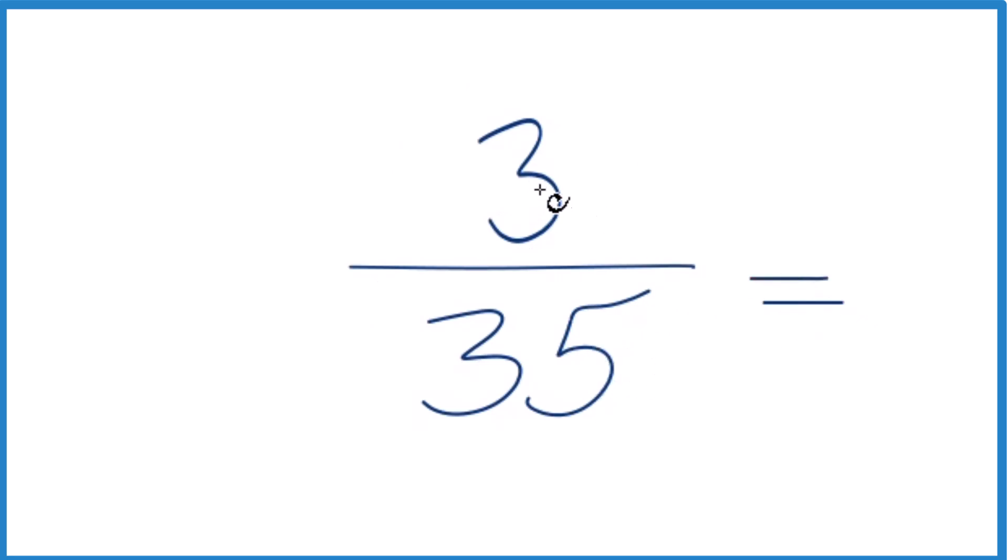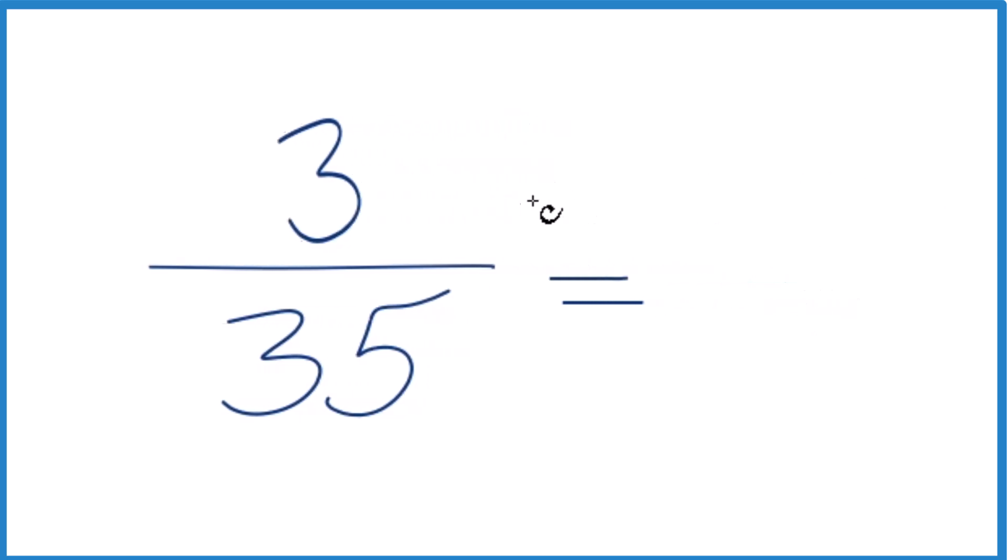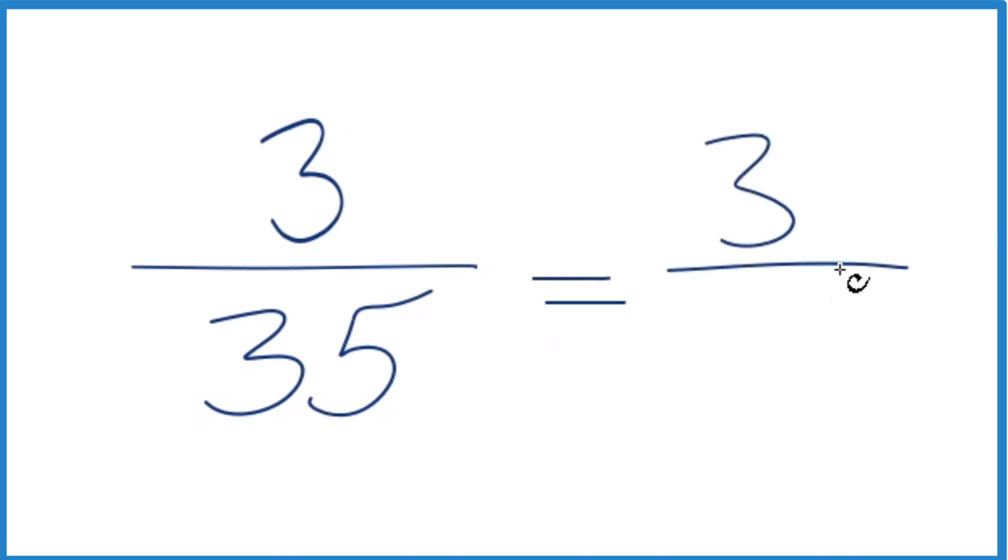So let's divide 3 by 1. 3 divided by 1, that's 3, and then 35 divided by 1, we get 35. And you'll notice that it's the same thing we started with.